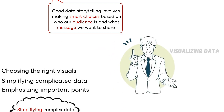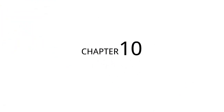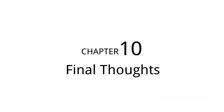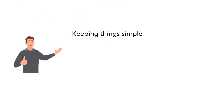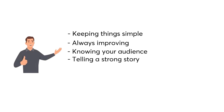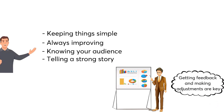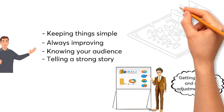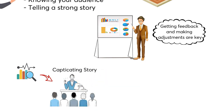Chapter 10, titled Final Thoughts, reviews the main ideas from the book and gives lasting tips on improving our data storytelling skills. Cole highlights the value of keeping things simple, always improving, knowing your audience, and telling a strong story. Clear visuals work best, and getting feedback and making adjustments are key. Customizing the message to fit the audience helps the data stories connect. Finally, turning data into a captivating story makes it memorable and convincing.